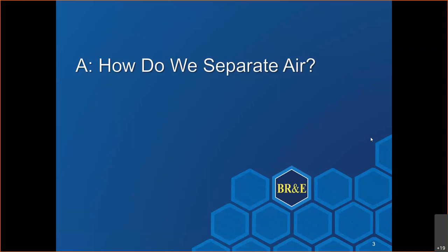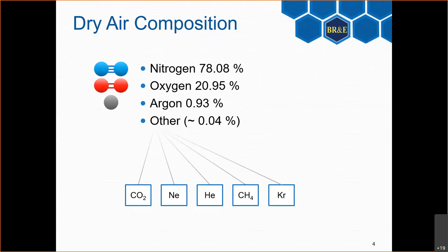The first important question is how do we separate air, and what is air? Most engineers know the rough numbers: around 78% nitrogen, 21% oxygen, and 1% argon in dry air. Besides that, we also have CO2, noble gases such as neon, helium, and krypton, and also a bit of methane. CO2 is the largest of these minor components, at around 400 ppm and growing.